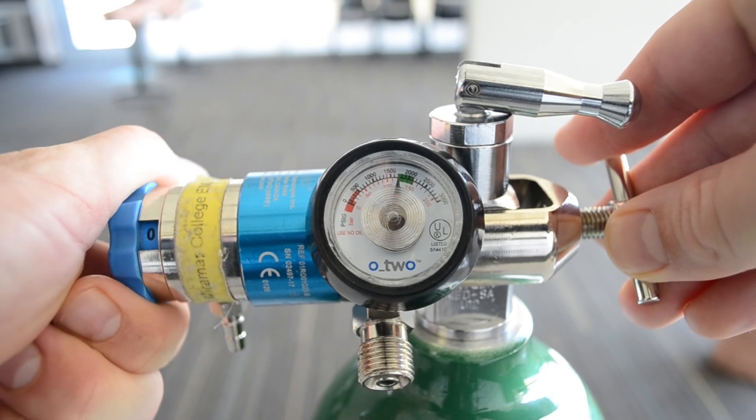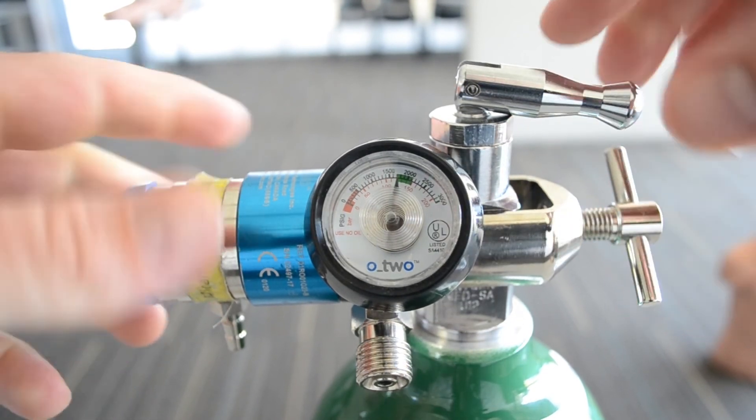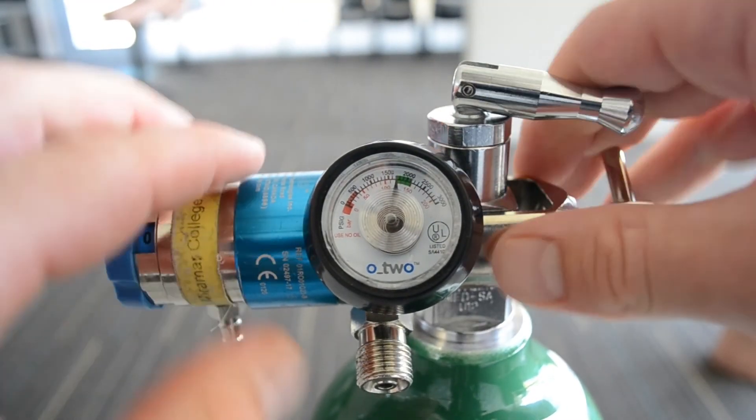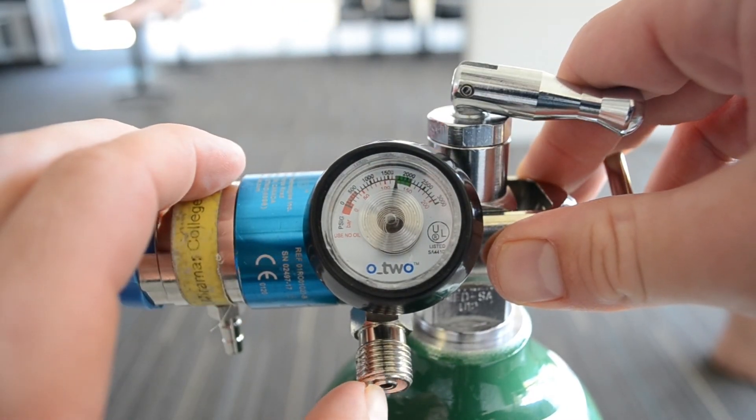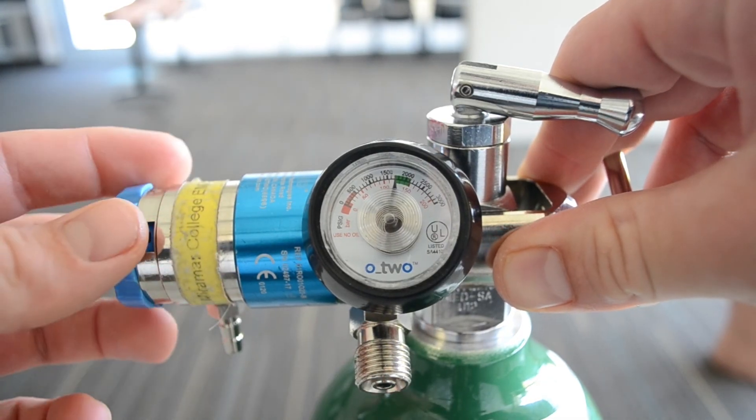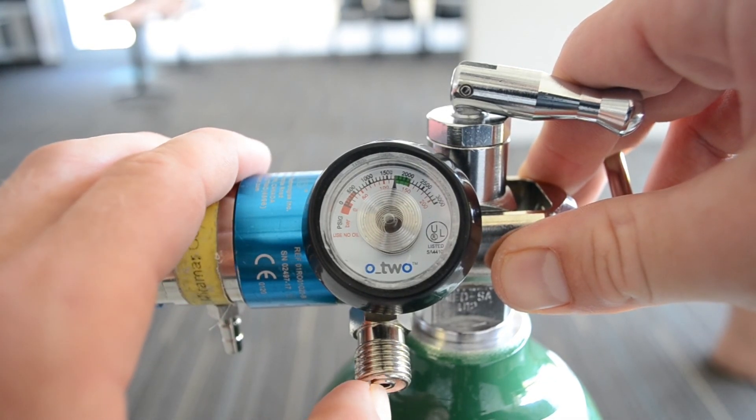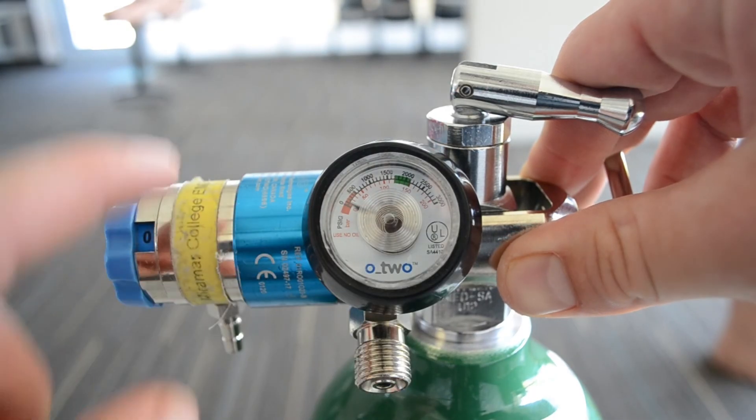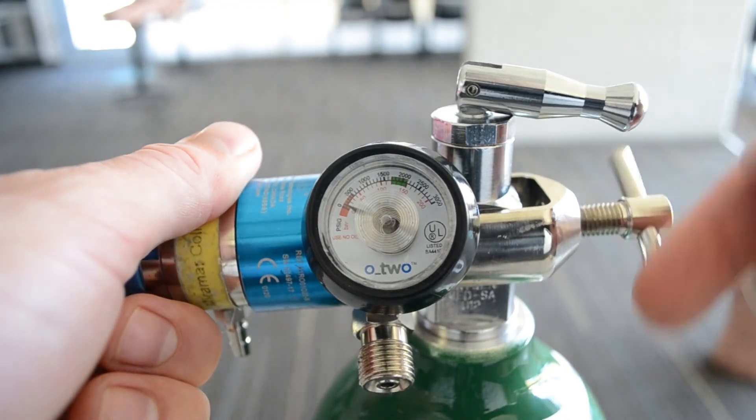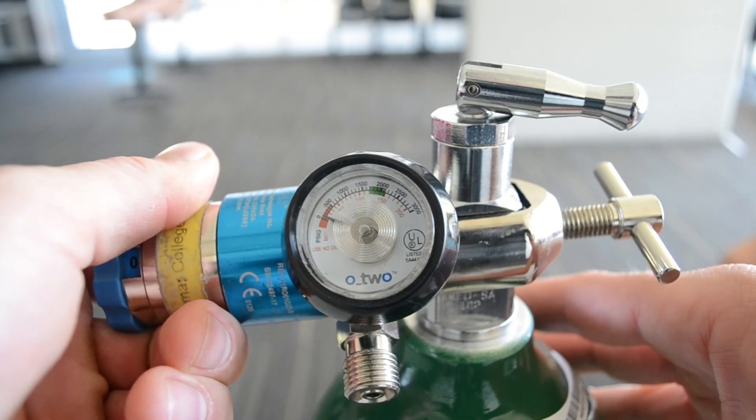When you're done, simply turn the regulator back to zero. Tighten this up one full turn. There's a little check valve here that you can press in or you can just open this up. I'm going to press this in because it's faster. So we release the pressure that was left in the regulator. Now we can take this off and remove it.